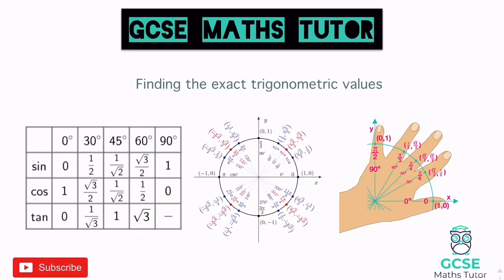Today we're going to have a look at finding the exact trigonometric values. Some of the things on the screen — you might have seen this table on the left and just been asked to learn it, or this thing in the middle, or the little hand trick. I'm certainly not bashing any of these methods, but I really do not like these ways of learning these values, just being asked to learn tables blindly or apply a hand trick with no real understanding. So we're going to look at a way of actually learning them that hopefully makes a lot more sense.